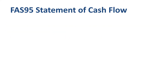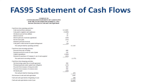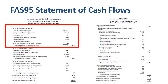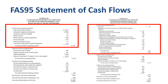Accounting statement FAS95 has examples with numbers of the direct method on the left and the indirect method on the right. The difference between the methods is purely in the section called CFOA, or cash from operating activities at the top. We will zoom in on those red boxes to see the detail. For the section at the bottom, the direct method and indirect method use the same line items.